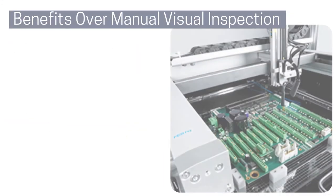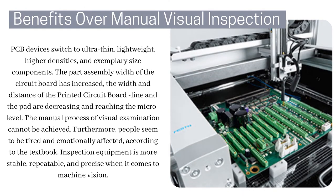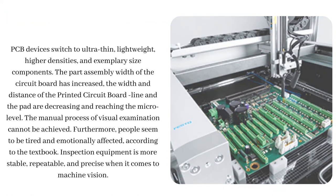Benefits over manual visual inspection: PCB devices switch to ultra-thin, lightweight, higher densities, and exemplary size components. The part assembly width of the circuit board has increased, while the width and distance of the printed circuit board line and the pad are decreasing and reaching the micro-level. The manual process of visual examination cannot be achieved. Furthermore, people tend to be tired and emotionally affected. Inspection equipment is more stable, repeatable, and precise when it comes to machine vision.